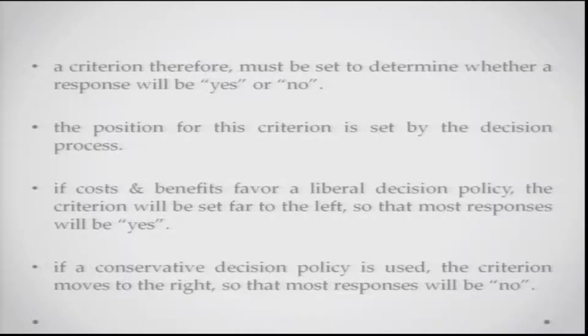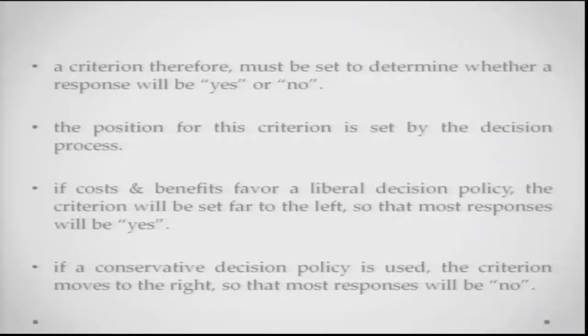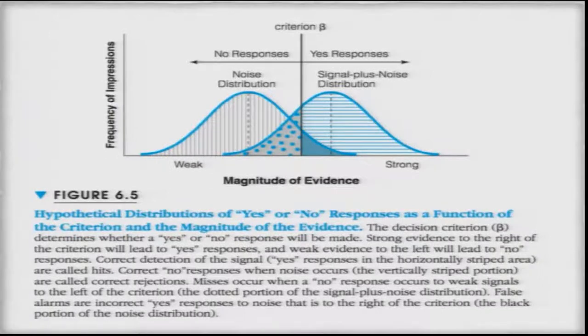The position of this criterion is set up by what is called the decision process. If the cost-benefit analysis favors a liberal decision policy — like going on a blind date — the criterion will be set slightly further to the left, so that most trials will yield a yes response. If it is a conservative decision policy — something very important — the criterion will move slightly towards the right and you will give more no responses. This decision criterion is called beta.